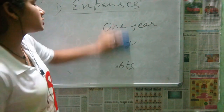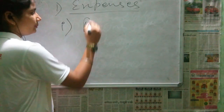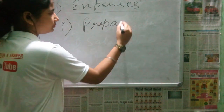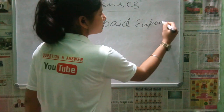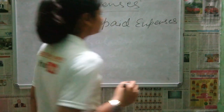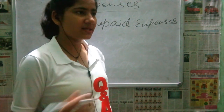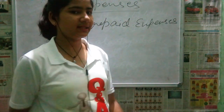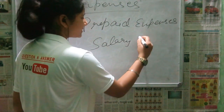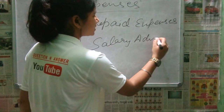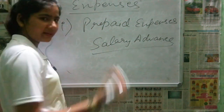Expenses are of two types. The first one is prepaid expenses. Prepaid expenses means advance payment — where we have given payment in advance. For example, if we have given salary for two months in advance, that is a prepaid expense.